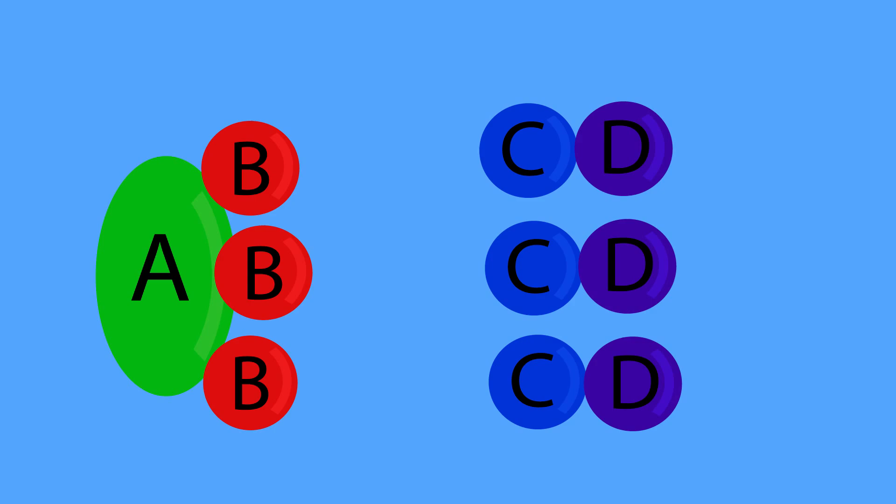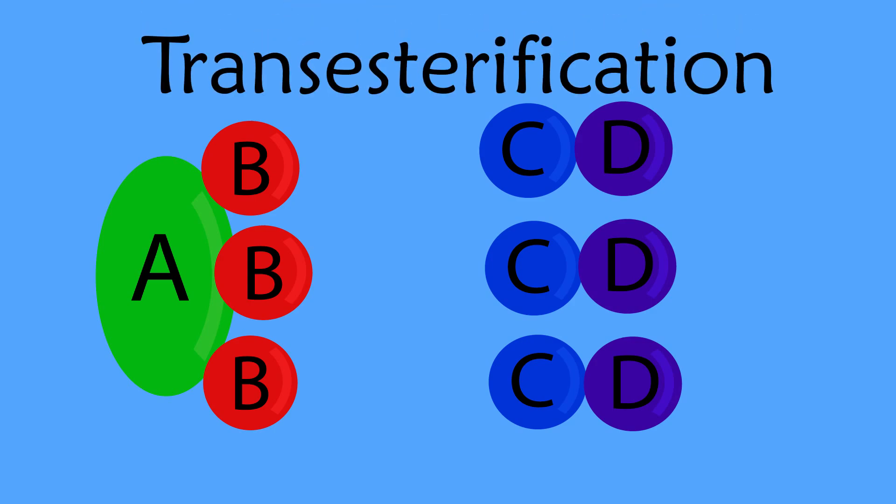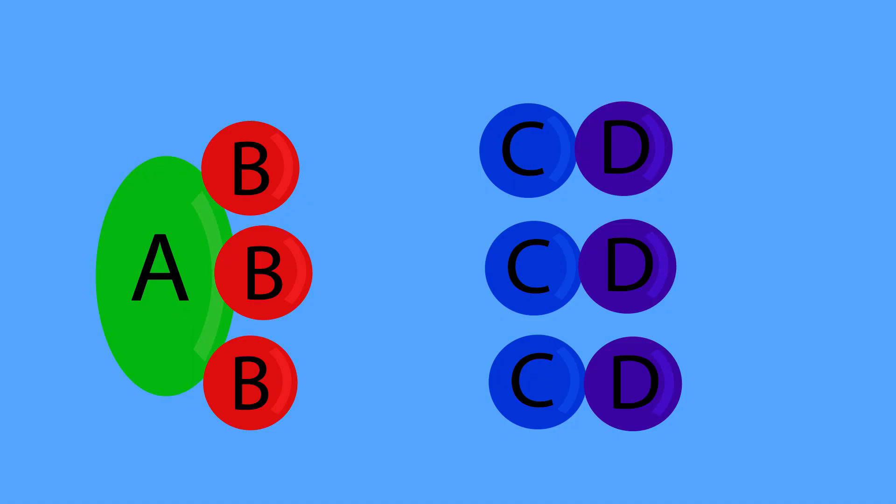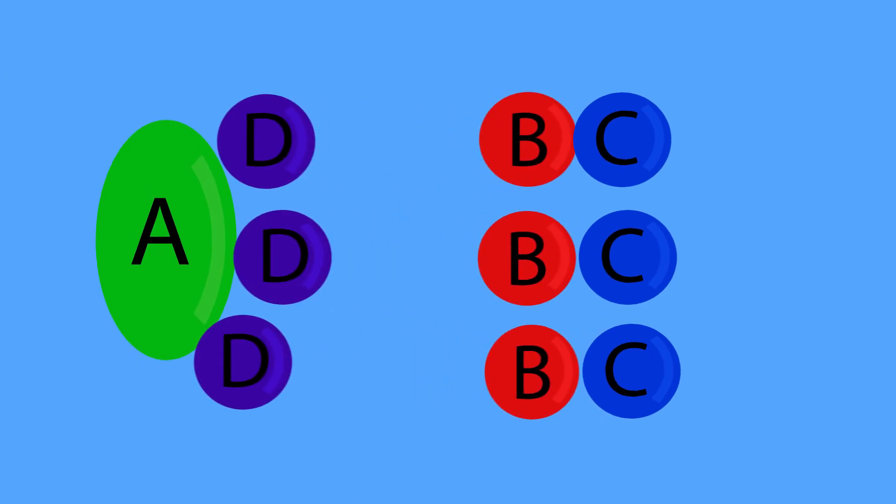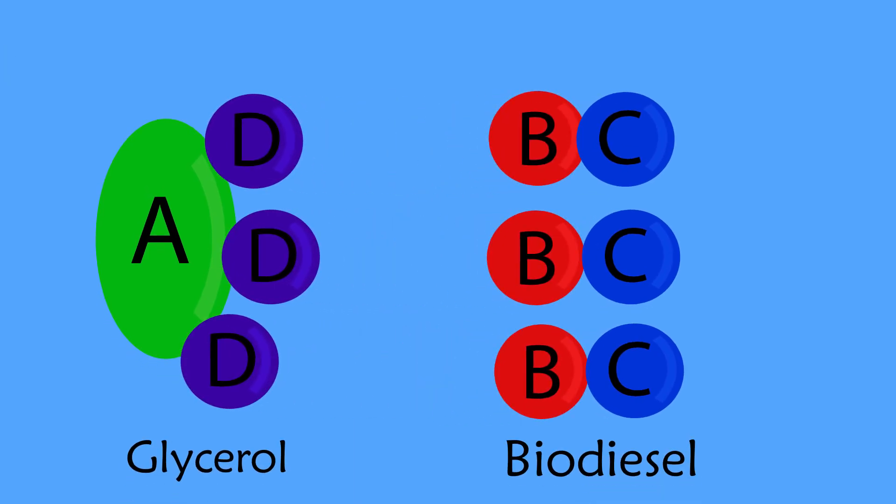The process for making biodiesel, called transesterification, is a chemical reaction in which one mole of triglycerides reacts with three moles of alcohol to produce three moles of alkyl esters and one mole of glycerol.